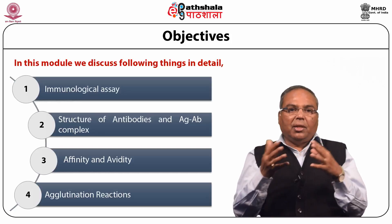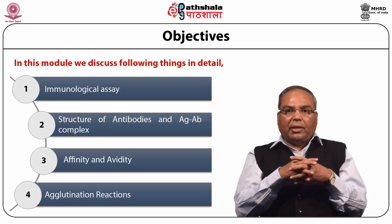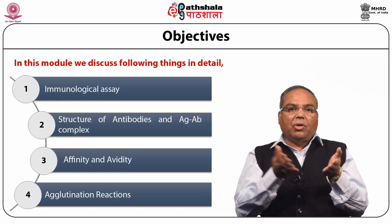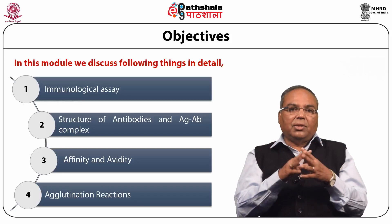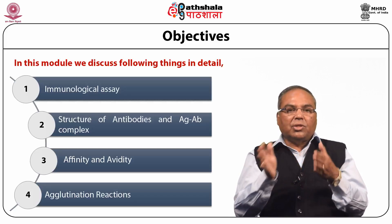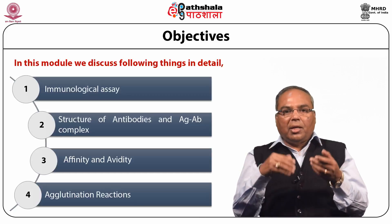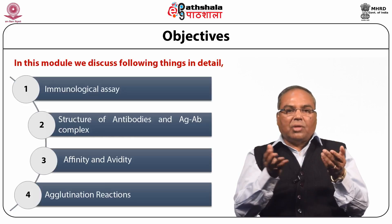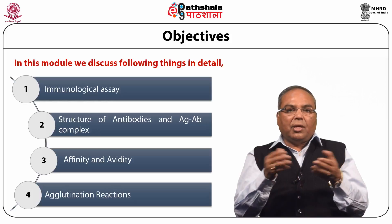Before going to the various techniques, one should know what is called the titer of the antisera. This titer of the antibody antisera reflects which method you are supposed to use. At the same time, one should know the affinity and avidity of the generated antibodies, because affinity and avidity finally dictate how sensitive the assay is. This antigen-antibody reaction can be seen in a semi-solid media, in a solid matrix, or on a cellulose membrane by doing various immunoassays.